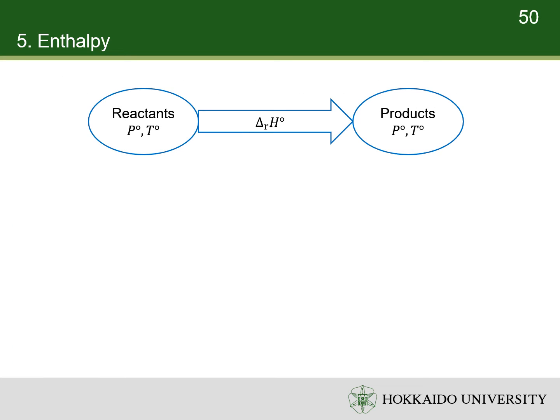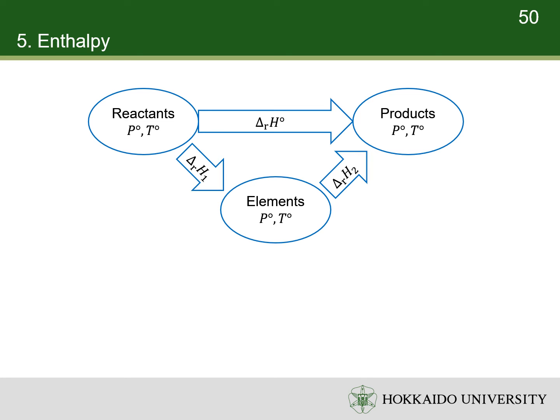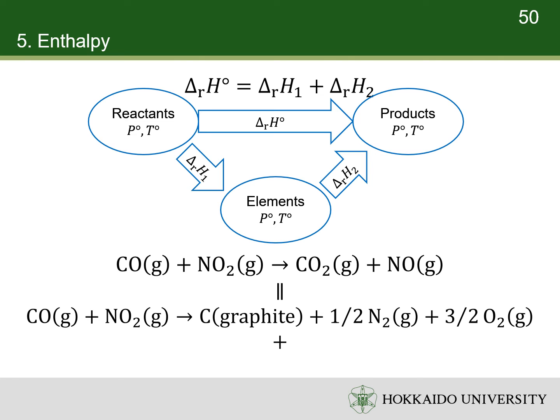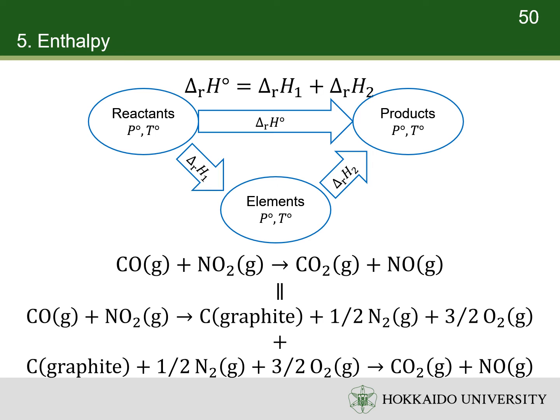We can use Hess's law to calculate the standard enthalpy of a reaction by dividing the reaction into two steps: first, decompose all the reactants to their constituent elements; second, form the products from the elements. The enthalpy of the reaction is the sum of the enthalpies of the two steps. For example, in the oxidation of carbon monoxide by nitrogen dioxide to form carbon dioxide and nitrogen monoxide, the first step is the decomposition of carbon monoxide and nitrogen dioxide to graphite, nitrogen, and oxygen. The second step is the reaction of graphite, nitrogen, and oxygen to form carbon dioxide and nitrogen monoxide.